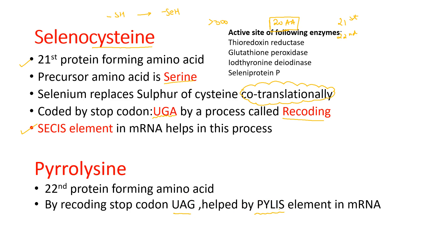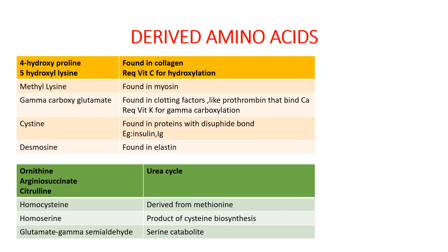Selenocysteine forms the active site of various enzymes, especially reductases and peroxidases. It is also found in the active site of iodothyronine deiodinase and selenoprotein P. The derived amino acids are those which undergo post-translational modification, and may be classified as those which form proteins and those which do not.